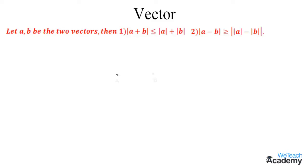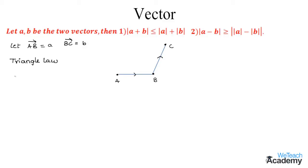First, let us consider three points in a plane and name those points as A, B, and C. Join the two points A and B, and let the magnitude of vector AB be 'a'. Similarly, join B and C, and let the magnitude of vector BC be 'b'. From our previous videos, we have already proved the triangular law of vectors, which states that vector AC = vector AB + vector BC, where AC is the line segment. So the length of AB is 'a' and BC is 'b'.